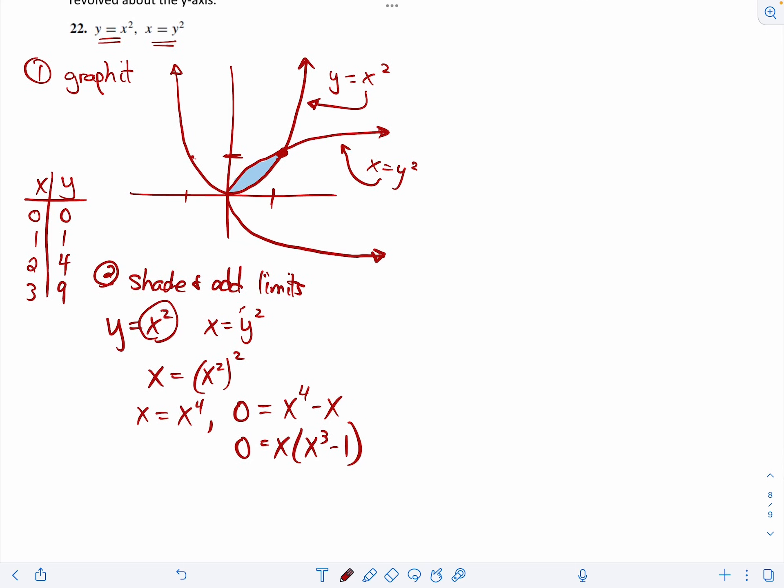The only two places using the zero product property is where either x is zero or where x cubed minus one is zero. So that means where x cubed equals one. There's only one number like that. Our intersection points are zero and one. And that comes out to be kind of confirmed by the graph. It's zero, zero. And that is the point one comma one. That's step two, shade and add limits.